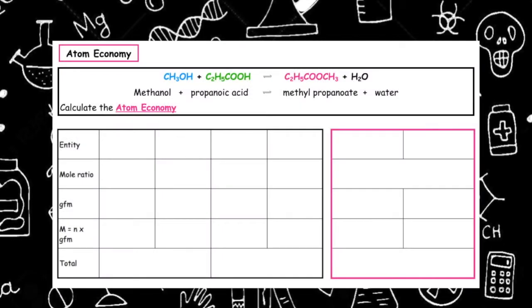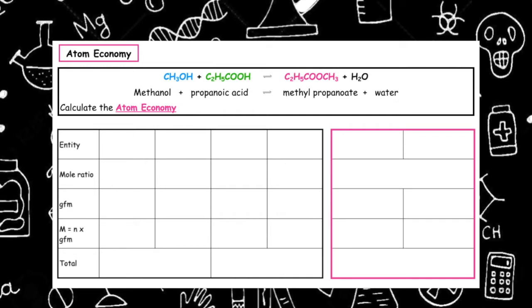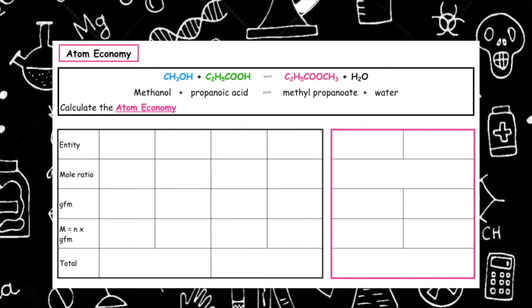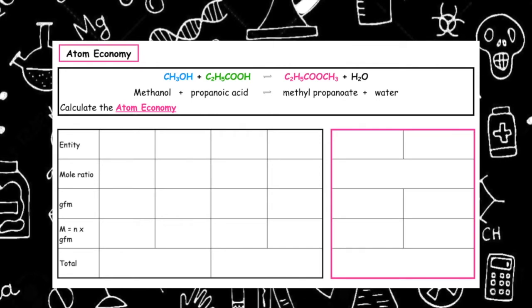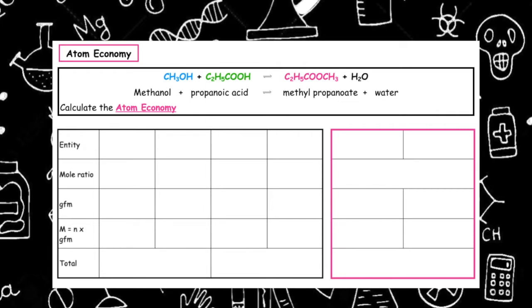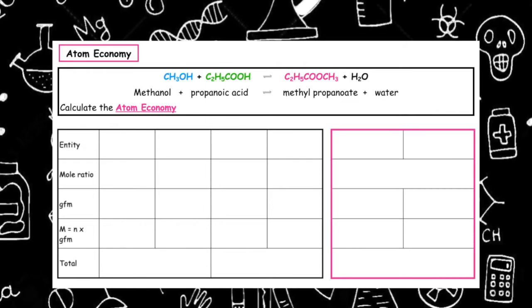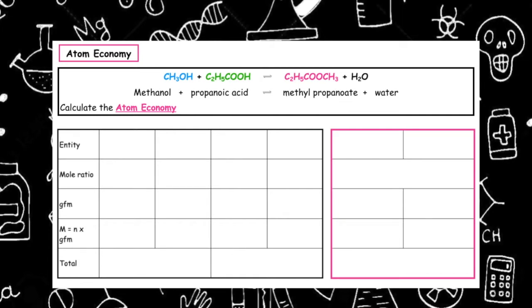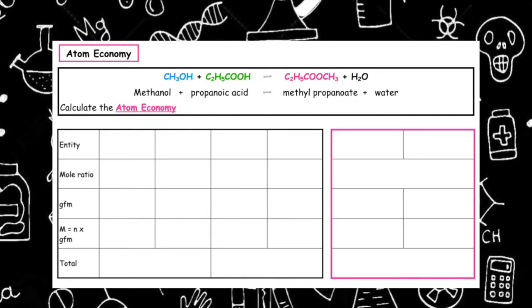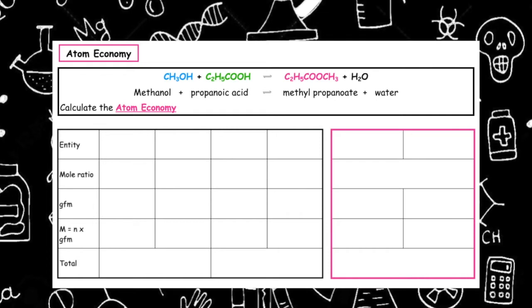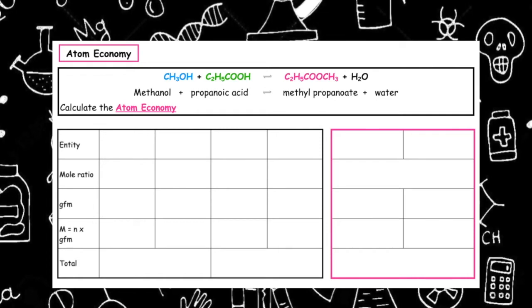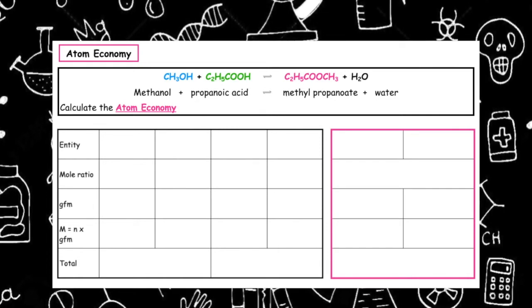The first law of thermodynamics states that energy cannot be created or destroyed, it can only change its form. So when we're looking at atom economy, we want to see where all of the atoms that we're putting into a reaction from our reactants go into our products. Here we've been given a balanced equation showing methanol plus propanoic acid which will produce methyl propanoate and water, and we're asked to calculate the atom economy.